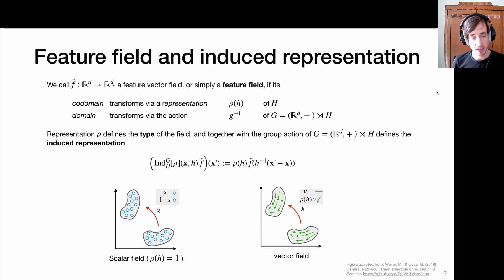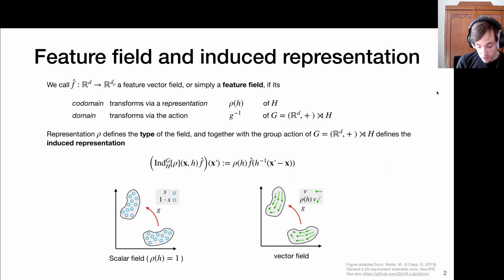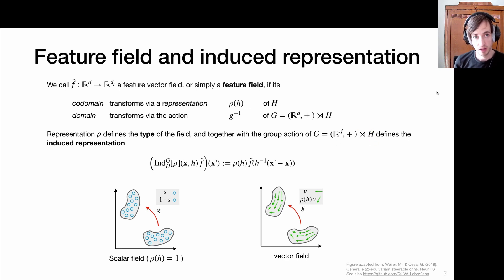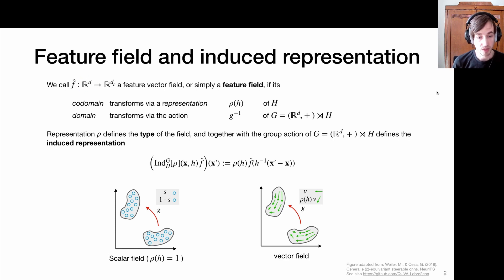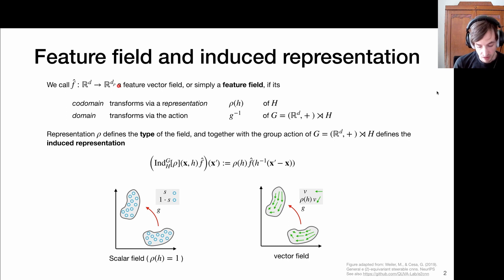Let me start off with a somewhat dry definition of a feature field. We talk about feature fields when we talk about objects like vector fields that transform under the action of a group that can be decomposed into the translation group and a subgroup H — the type of affine groups we've seen before. A feature field is a vector field that has its domain as the D-dimensional Euclidean domain, which can be identified with the translation group, and every element in its domain is mapped to a vector that lives in a D-row-dimensional vector space.